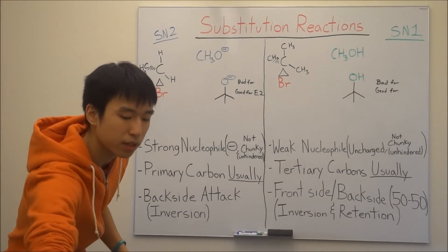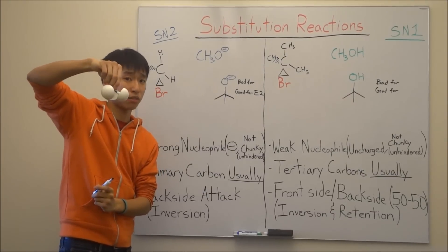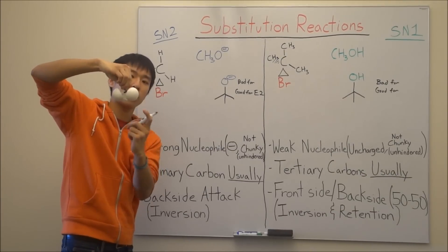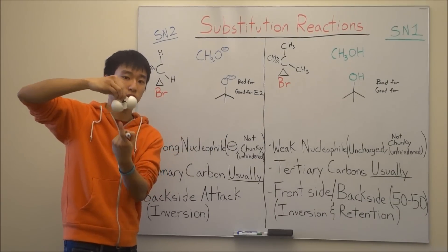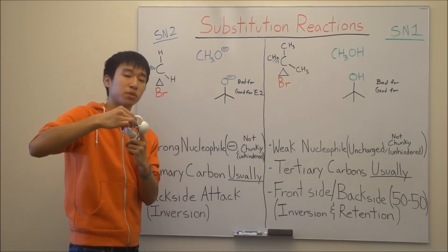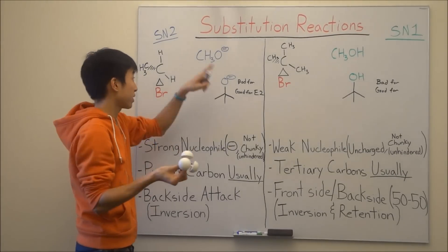So kind of pretend like this is tert-butoxide. Pretend like my finger here is the, I guess, the negative O. And you see how there's these extra CH3 groups here that kind of make it really chunky.